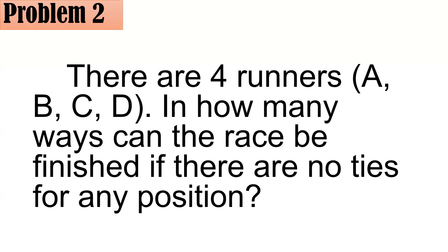When we say no ties for any position, let's assume that all of them have different ranks. It's not possible to have two people who are second place. There should only be one first placer, one second placer, one third placer, and one fourth placer. What do you think is the answer? Feel free to pause the video. Let's now discuss.